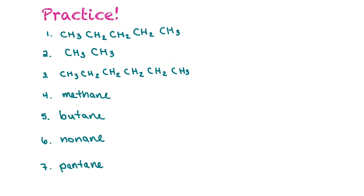Let's do some practice. Number one: we count five carbons — the prefix for five is pent — so this is pentane. The next one has just two carbons, which is the one we drew, so that's ethane. The next one has six carbons, so that's hexane.